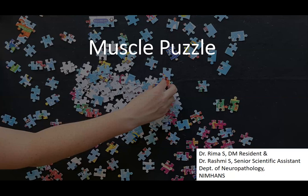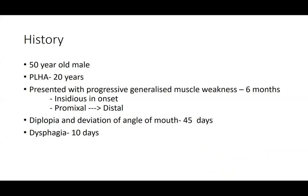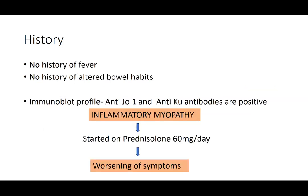Today we'll be presenting a case titled 'Muscle Puzzle.' This is about a 50-year-old male who presented with progressive generalized muscle weakness for the past six months. The weakness was insidious in onset and progressed from proximal to distal. The patient also had diplopia and deviation of angle of mouth for 45 days and dysphagia for the last 10 days. He is a known case of HIV on regular treatment for the last 20 years. Due to progressive muscle weakness, the patient was found to have anti-Jo-1 and anti-Ku antibodies positive, and was diagnosed with inflammatory myopathy and started on steroids. Despite treatment, the patient had worsening of symptoms.